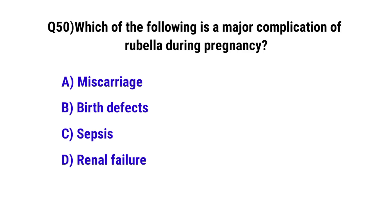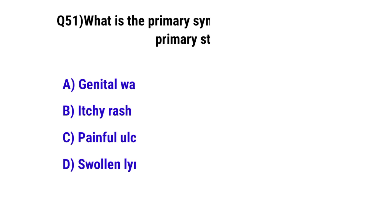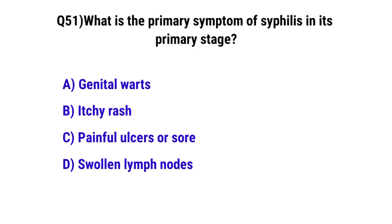Question No. 50: Which of the following is a major complication of rubella during pregnancy? The correct option is B: birth defects. Question No. 51: What is the primary symptom of syphilis in its primary stage? The correct option is C: painless ulcer or chancre.